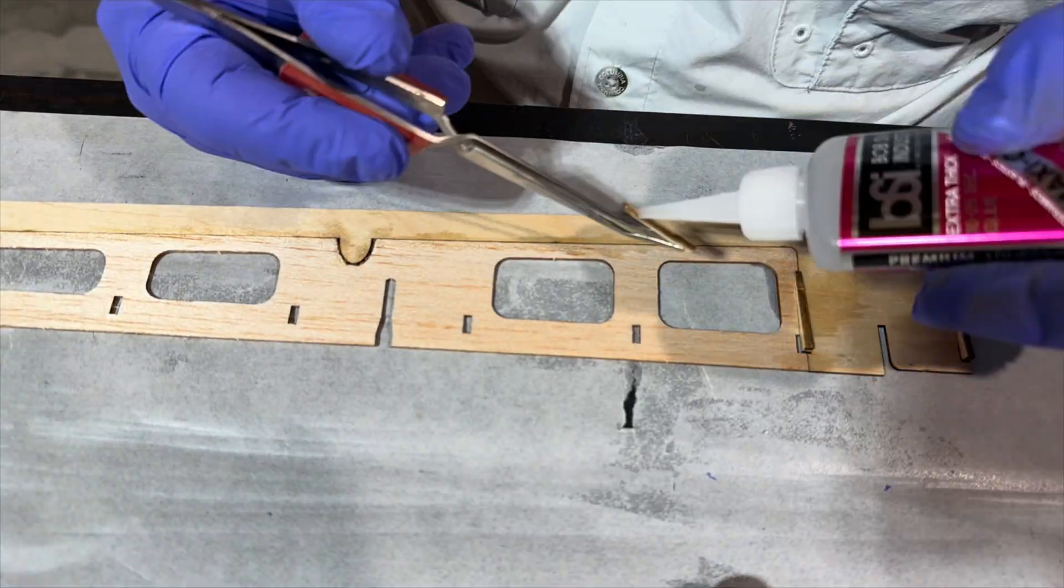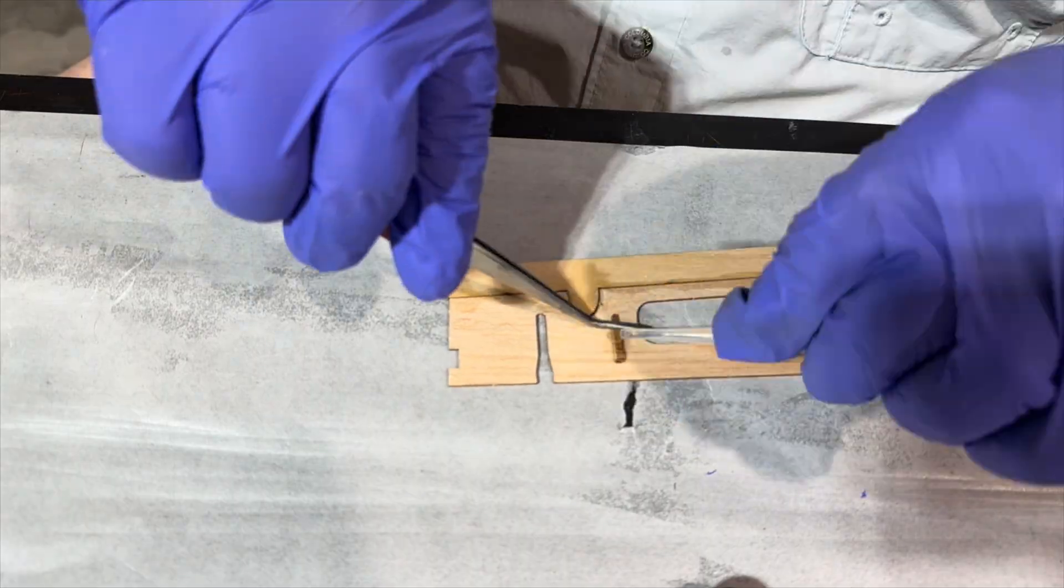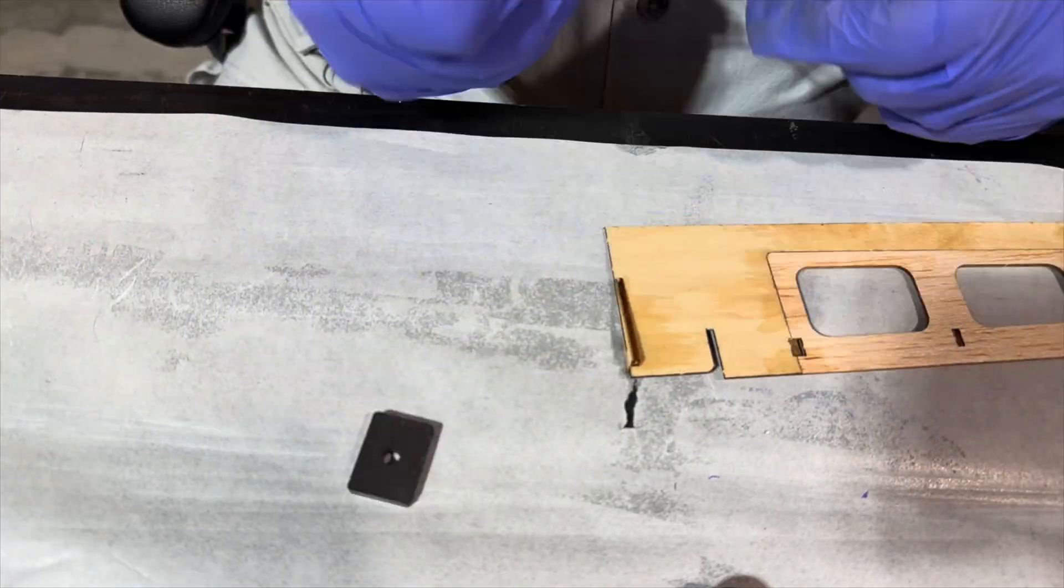Now what we're doing here is we're actually putting on the ribs for the elevator. And you can see that we're using tweezers. You're definitely going to want to use tweezers. It makes it a heck of a lot easier.